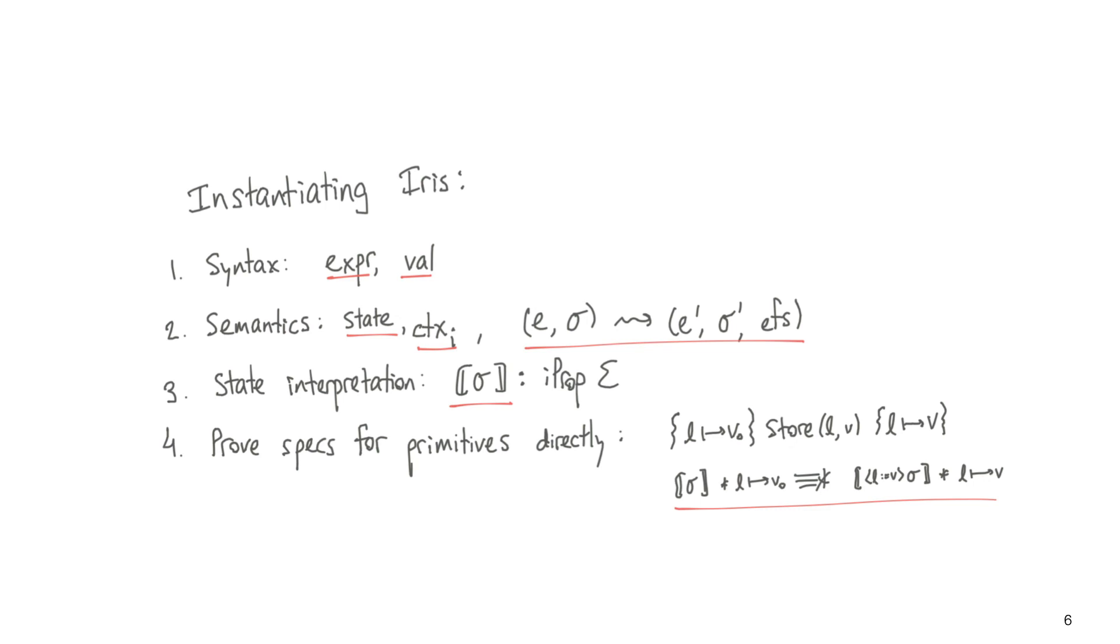Next, to use the Iris program logic and its definition of weakest preconditions, we have to give a state interpretation that maps our language's states into some form of Iris ghost state. We saw a typical example of this, where the state interpretation is some authoritative ownership, and individual threads own fragments of the same ghost variables as the authoritative ownership.